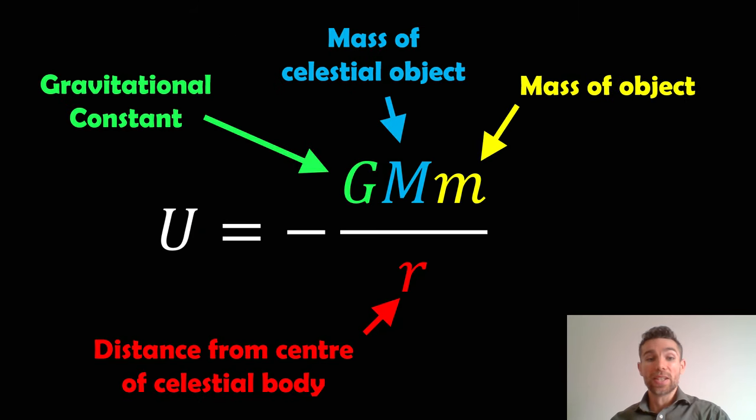We can then define the gravitational potential energy as U, and that is equal to minus the gravitational constant times the mass of a celestial object, in this case Earth, times the mass of the object or the projectile or rocket, and then you divide that by r, which is the distance from the center of that celestial object, which would be the radius of Earth. If we're launching from the surface of the Earth, r would be the radius of the Earth.